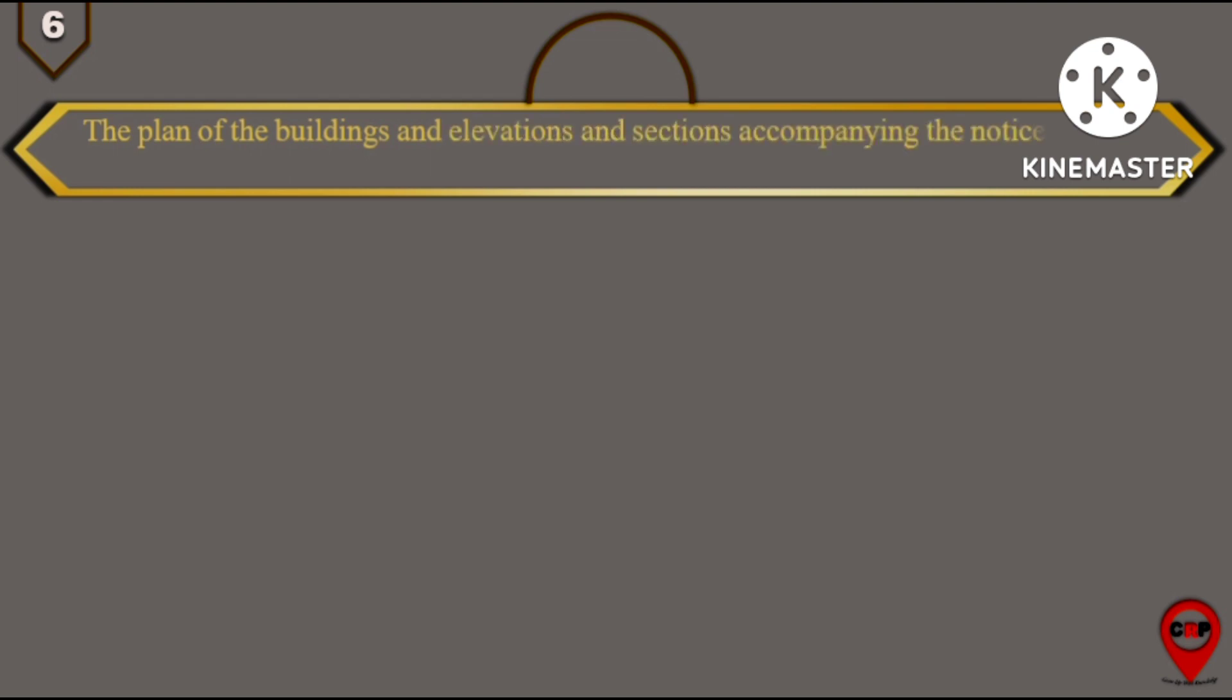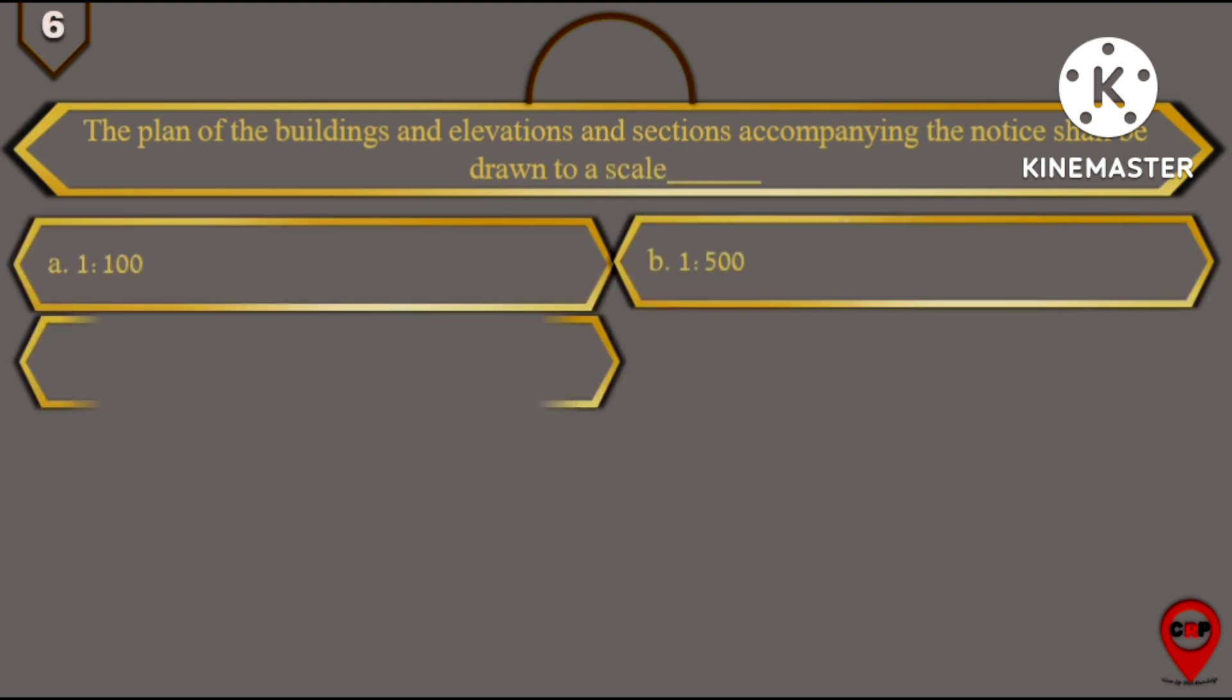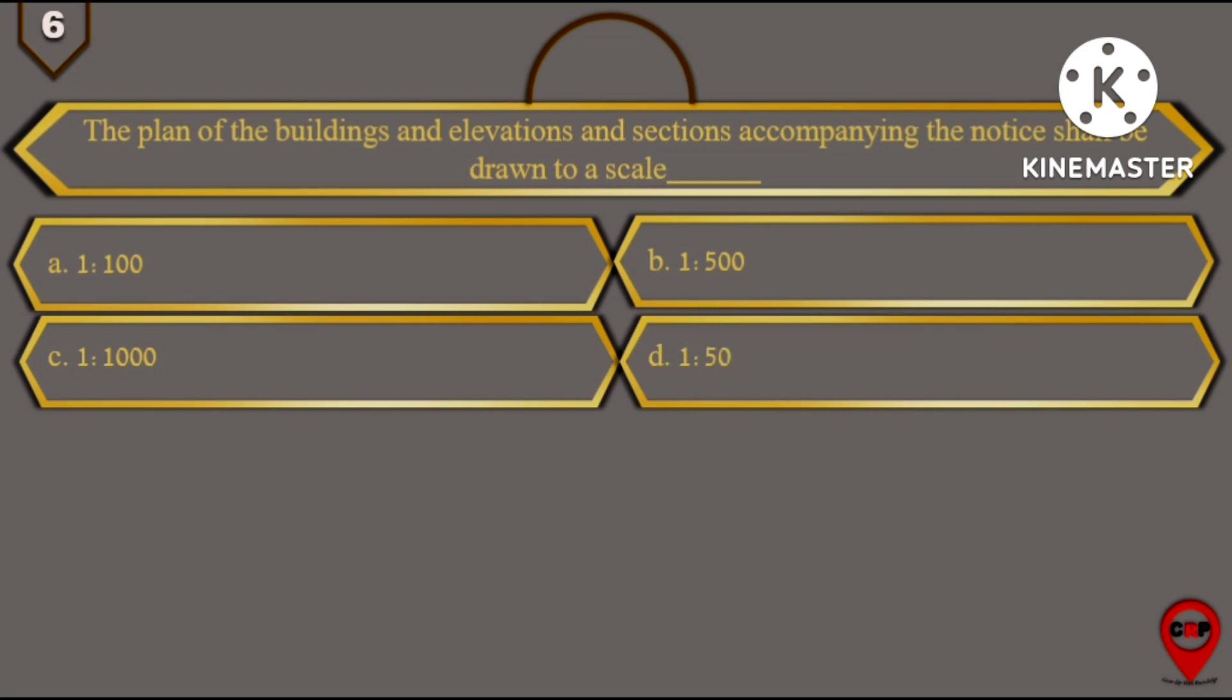Next question, question number 6: The plan of the buildings and elevations and sections accompanying the notice shall be drawn to a scale. Options are: 1 is to 100, 1 is to 500, 1 is to 1000, and last option 1 is to 50.